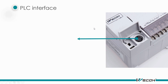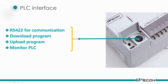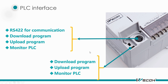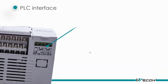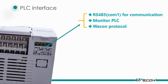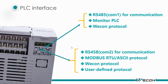Here is the POC interface. The round connector is the RS422 for communication. There is also a micro-USB port for downloading or uploading programs, and we can also use the micro-USB port to monitor the POC values. We can also see two RS485 COM ports, COM1 and COM2. COM1 can only support the WIFI protocol, while COM2 can support Modbus, ASCII, and RTU protocols, or the WIFI protocol, or a user-defined protocol.